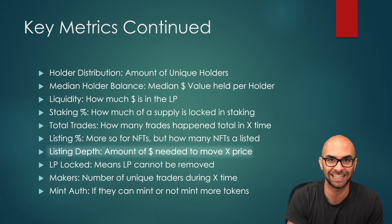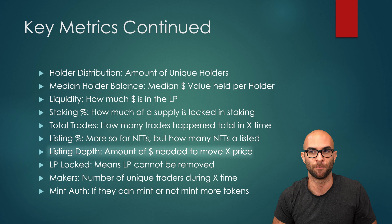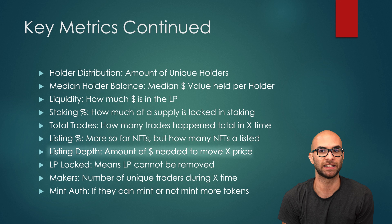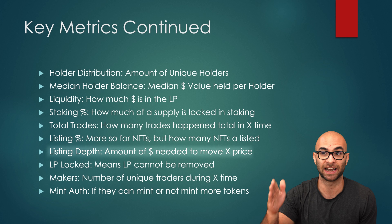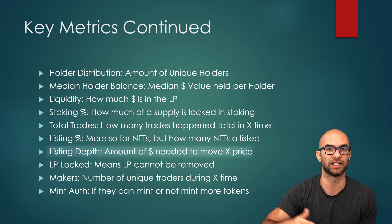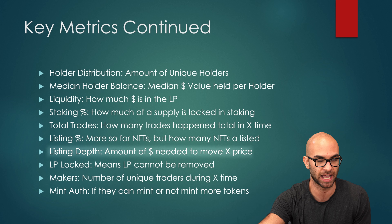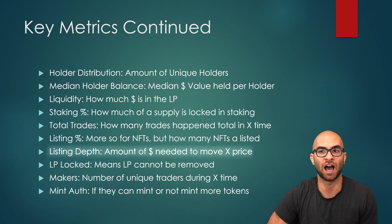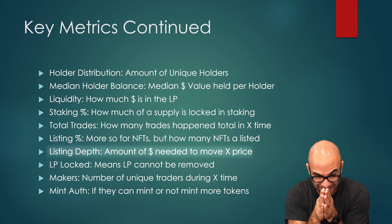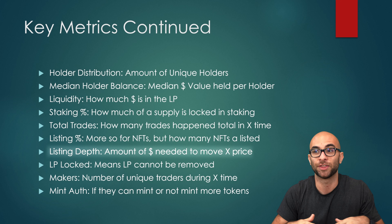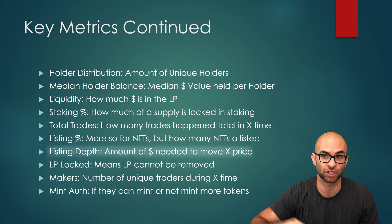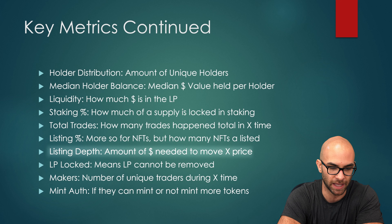That's what the listing depth is called — the amount of money needed to move a price by X amount. For example, if there are 50 NFTs listed at $1,000 and the 51st listing is $1,100, you're going to need 50 buys at $1,000 — that's $50,000 — to move the price $100 or 10%. That would be your listing depth. The stronger your listing depth is, or the more thick it is and the more listings there are, the harder it is for the price to actually move up.